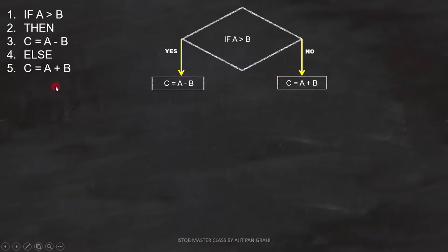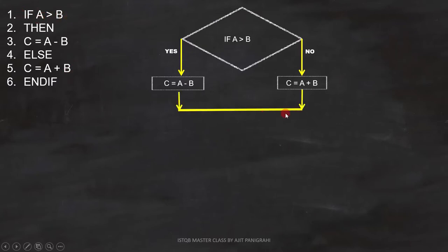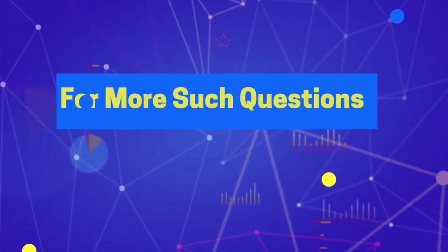Now line number 6 is important, which is: end if. End if is used to terminate the if statement, and this is how it is represented in the flowchart.